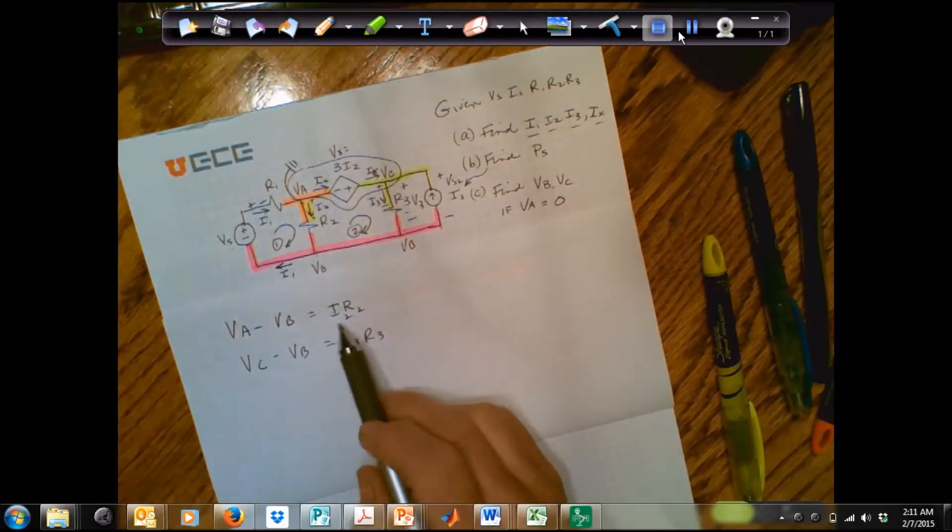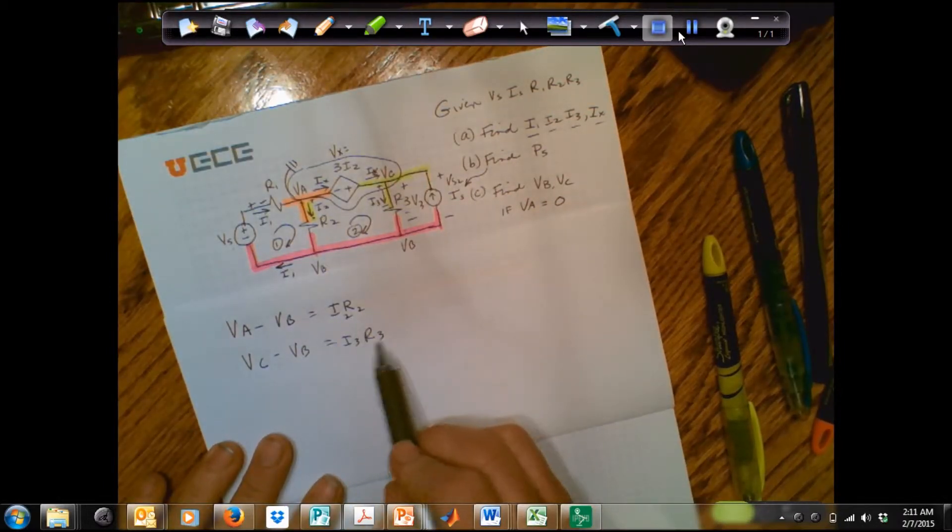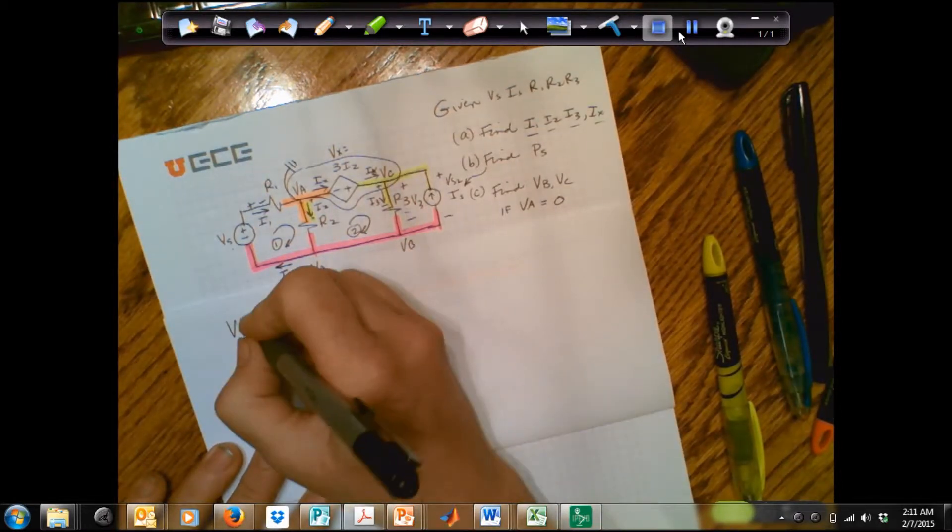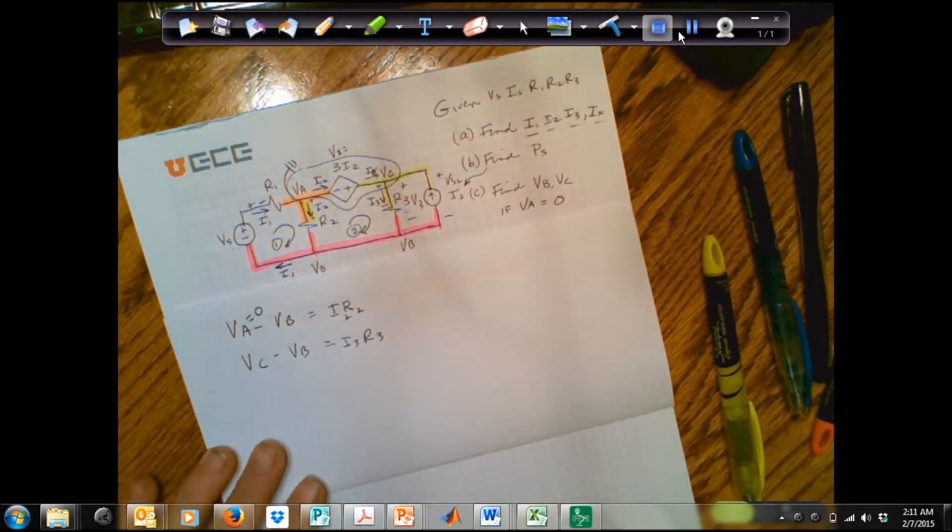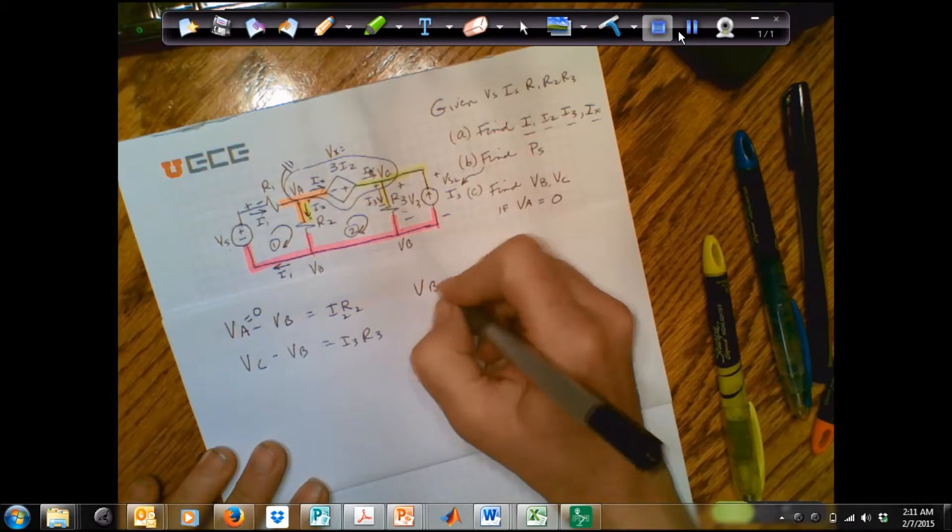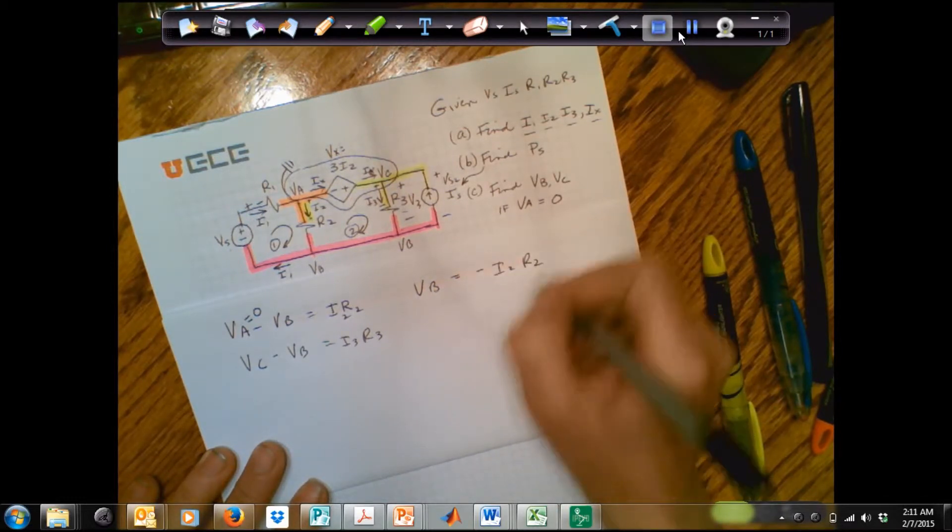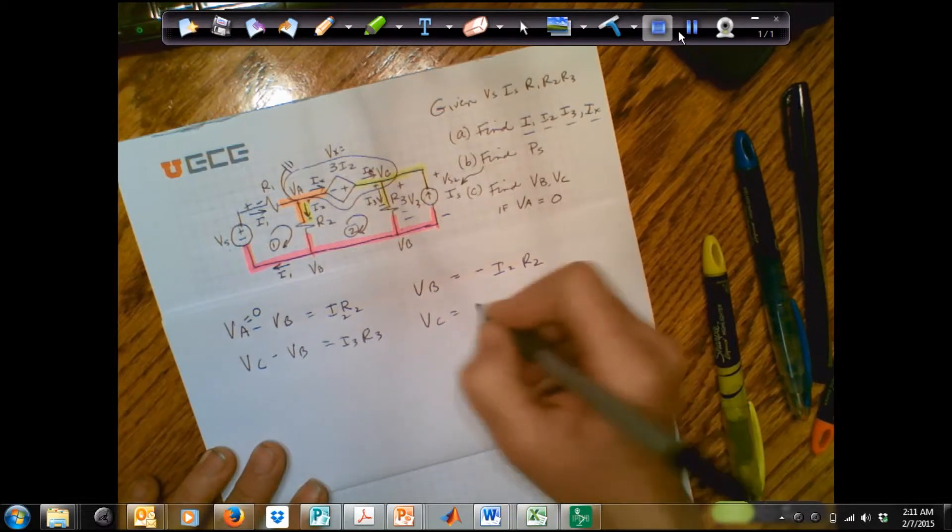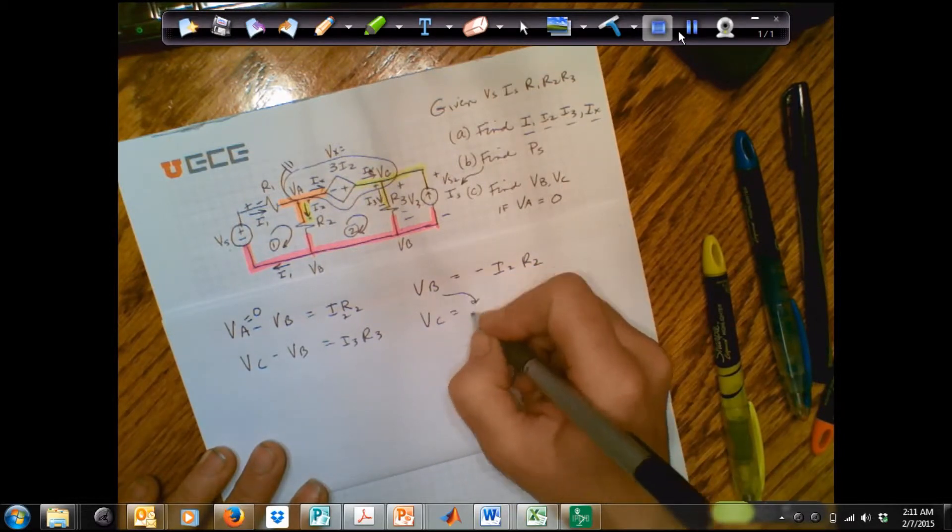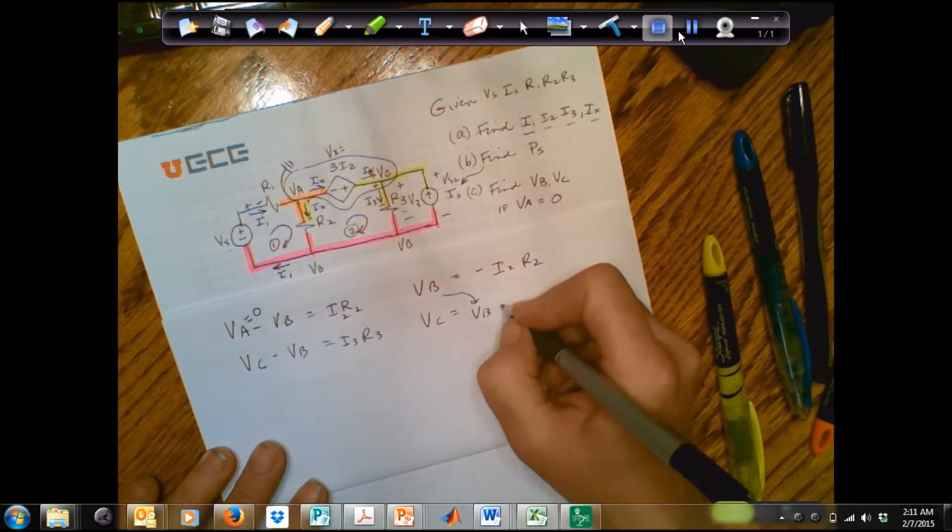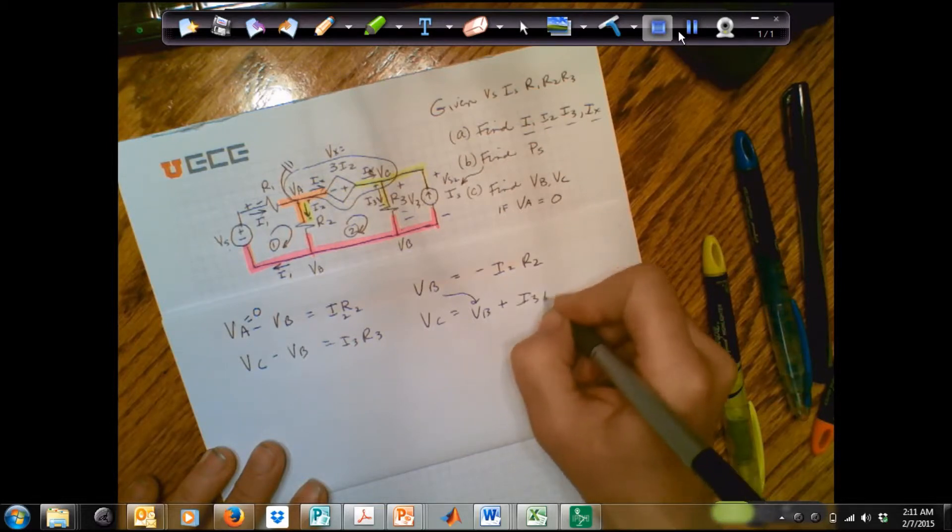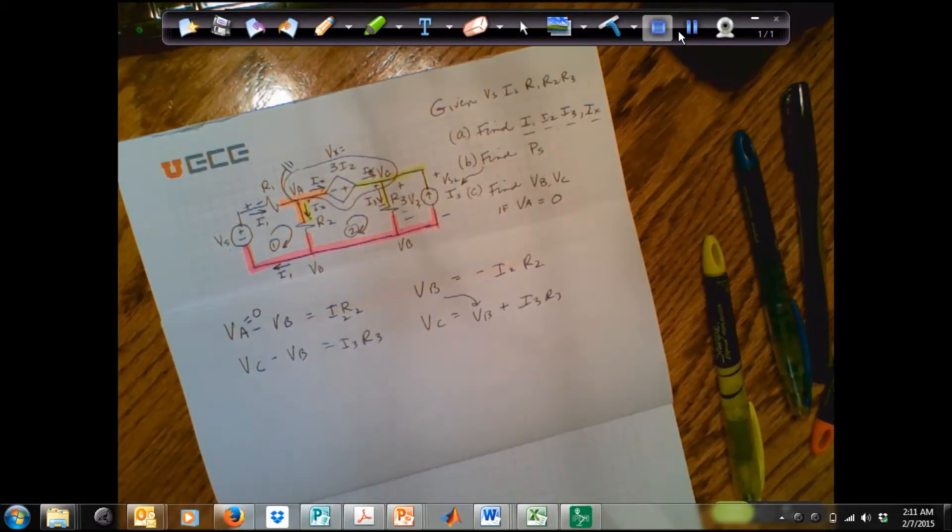Okay, I know I2, R2, I3, R3, and I know one of these nodes, VA is equal to 0. So I can say VB is equal to minus I2, R2, and VC is equal to VB, which I just found, plus I3, R3. So now I have found the node voltages.